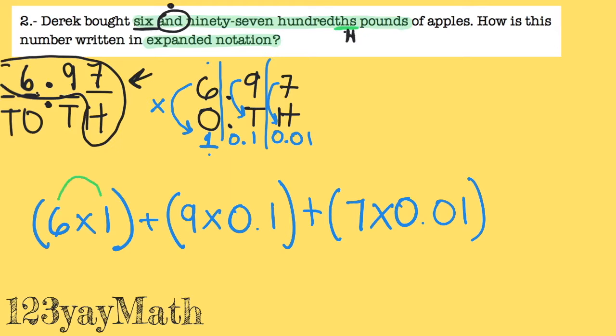Six times one is six. Nine times 0.1 is 0... this nine goes here, so it's 0.9. Seven times 0.01 is 0.07. And then you add it up.